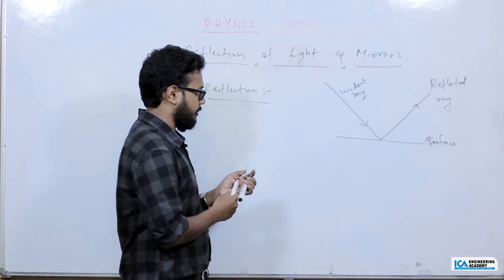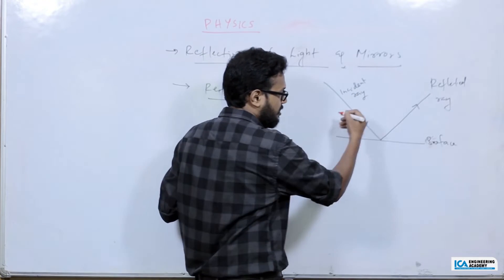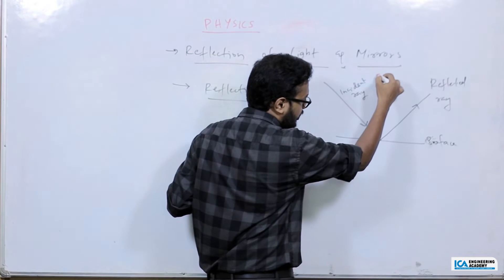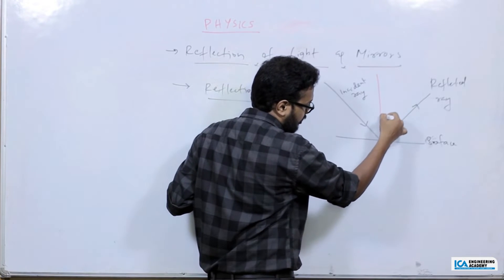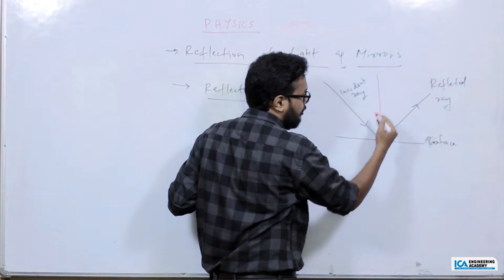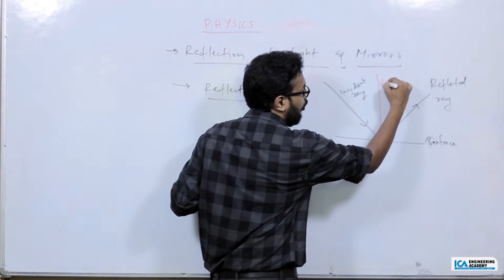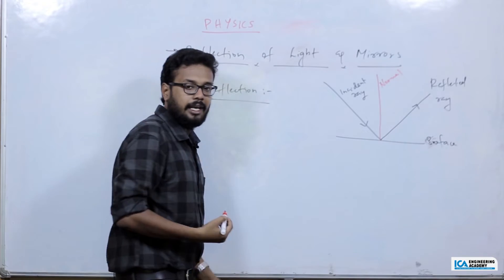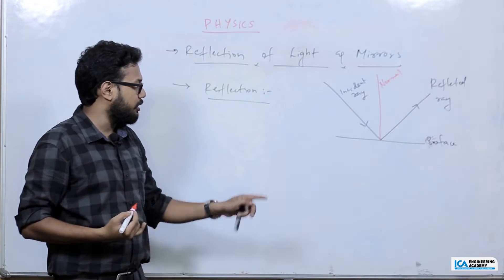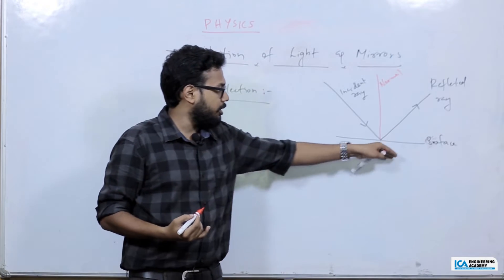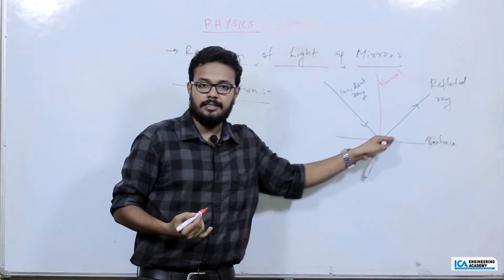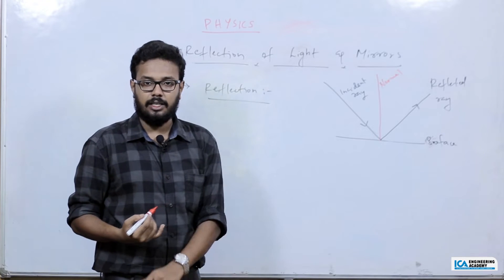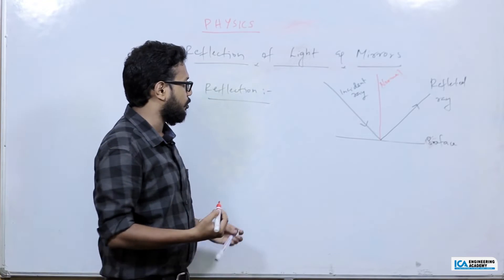Reflection of Light. We have the incident ray and the reflected ray, and there is another line — the normal. The normal is perpendicular to the surface at the point of incidence.